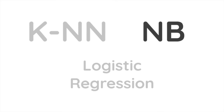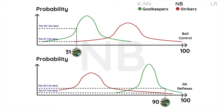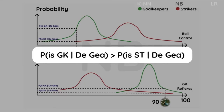Next, we will introduce our naive Bayes model. Let's introduce De Gea into the graphs. De Gea has low ball control and high goalkeeping reflexes — both seem to suggest that he is part of the green curve. We get the corresponding probabilities of De Gea being in a certain position based on goalkeeping reflexes only. It suggests that De Gea should be a goalkeeper. Given De Gea's stats, the probability that he is a goalkeeper is greater than the probability that he is a striker. Hence, our naive Bayes model would predict De Gea to be a goalkeeper.